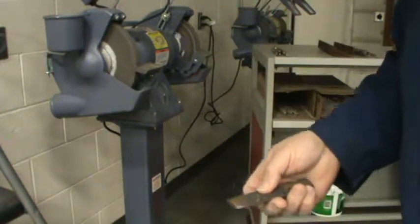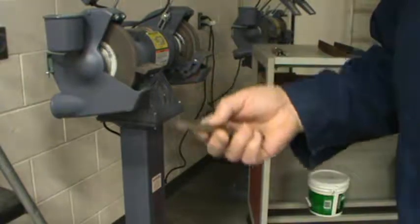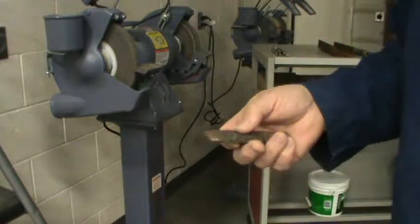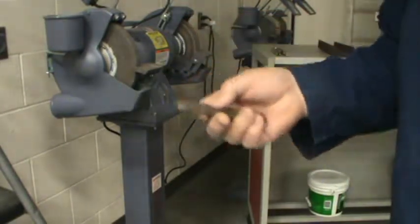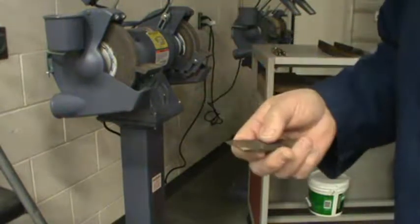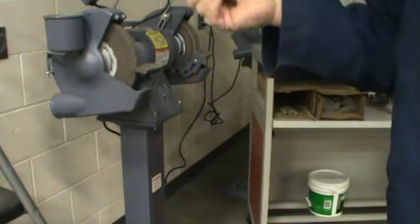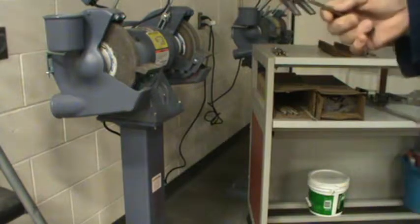Steel is made by adding carbon, and we get that carbon by adding a flux product in the process of refining the iron into steel. The flux also burns off any extra impurities that are in there.